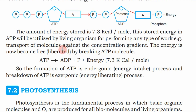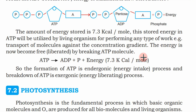This energy stored in ATP is utilized for any work, such as the transport of molecules against the concentration gradient, and this energy is released as a result of breaking the ATP bond. You can see that: ATP gives ADP plus phosphate plus energy, and this energy amount is 7.3 kilocalories per mole. This is the measuring unit.